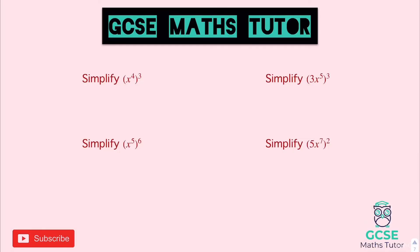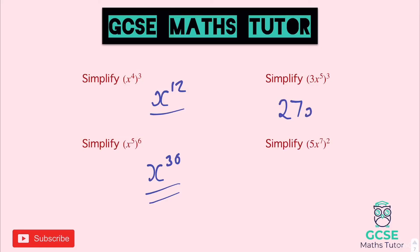Pause the video and have a go at these. Multiplying the powers in the first one gives x to the power of 4 times 3, which is 12. The one below: 5 times 6 gives 30, so x to the power of 30. Introducing some numbers: 3 cubed is 3 times 3 times 3, which is 27, and then 5 times 3 is 15, giving 27x to the 15. The last one: 5 squared is 25, and multiplying the powers gives 7 times 2 which is 14, so 25x to the power of 14.